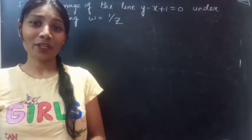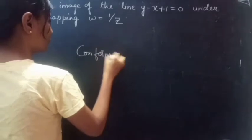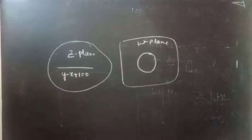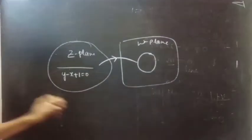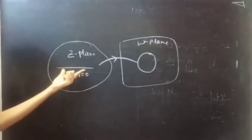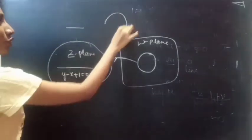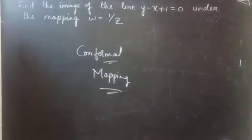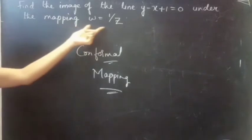Hello everyone, this is Yo Katna here. In this video we are going to see a problem from conformal mapping. We are given a line from the Z plane, and this line maps to some figure in the omega plane. The line in the Z plane is changed to a circle when it comes to the omega plane. Problem: find the image of the line y minus x plus 1 equals 0 under the mapping w equals 1 by z.